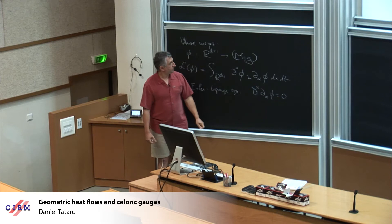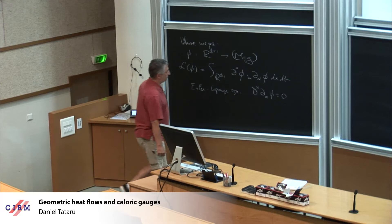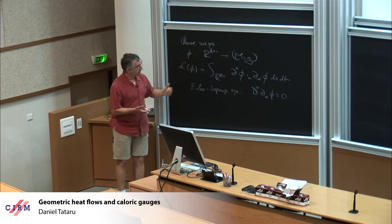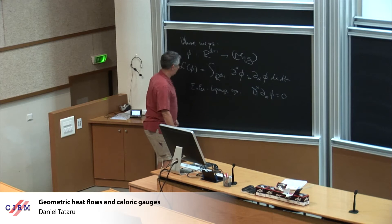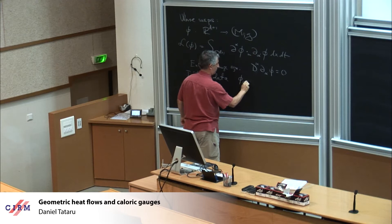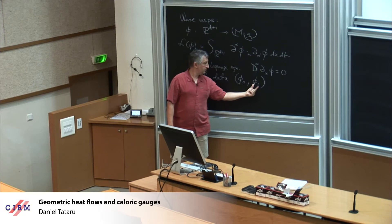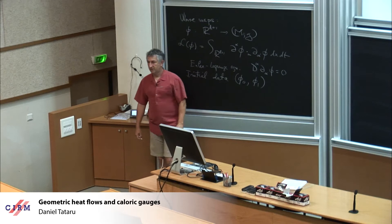This is the wave map equation. It's a second-order hyperbolic equation. To solve this, you need to assign initial data: phi_0 and phi_1 — the initial position and the initial velocity. This phi_0 is a map, and phi_1 is a map which takes values in the tangent space of M at phi_0.